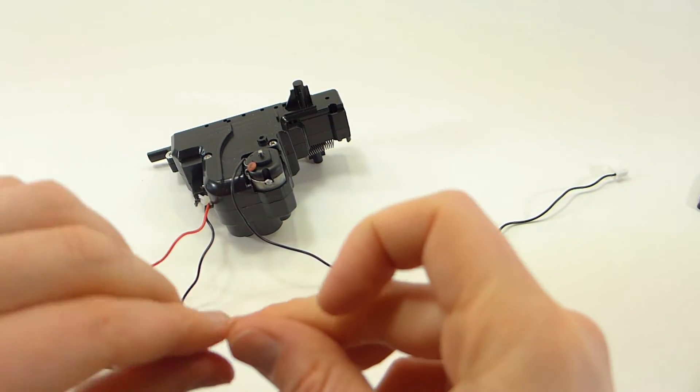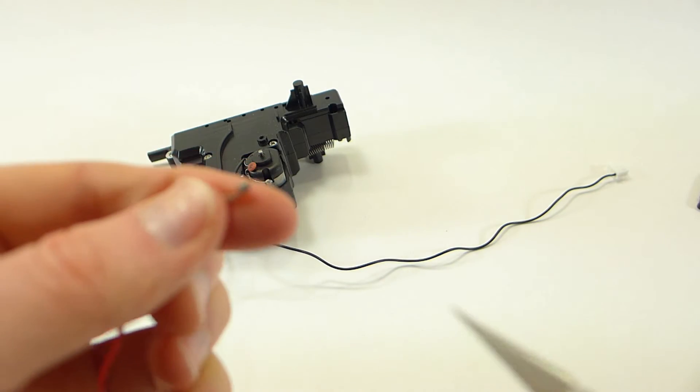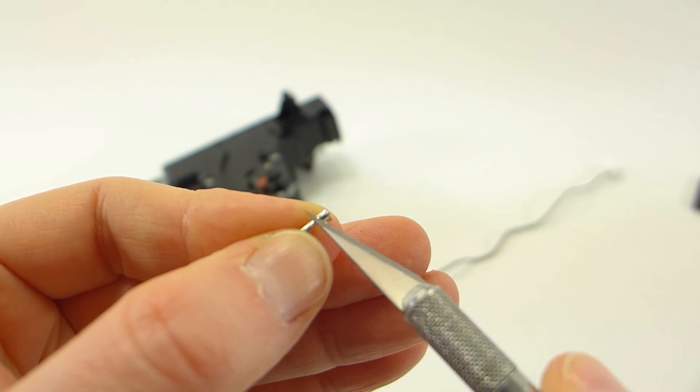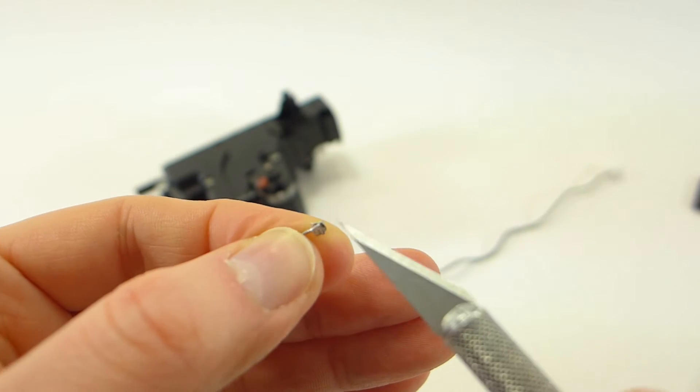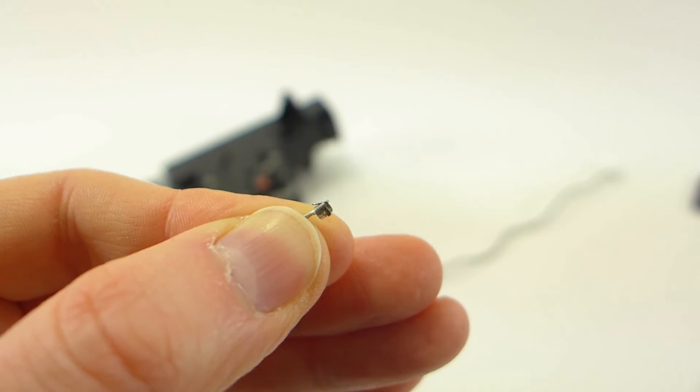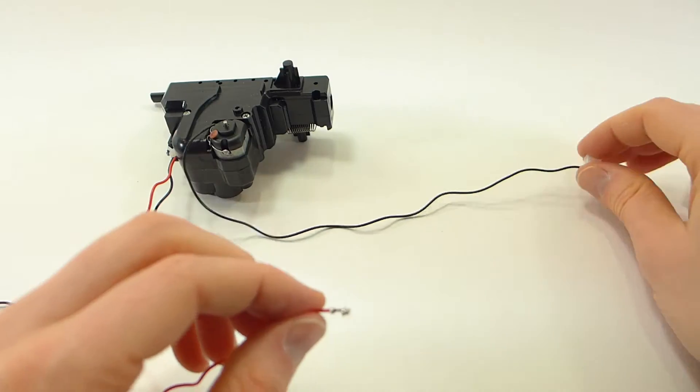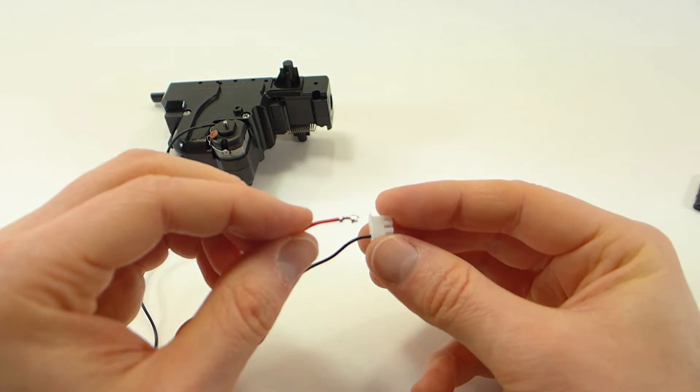Next we're going to take the red wire that is attached to the limit switch. Again we're going to lift up the tab a little bit, and then it will go into the top position of our three-pin plug.